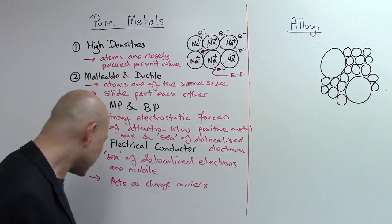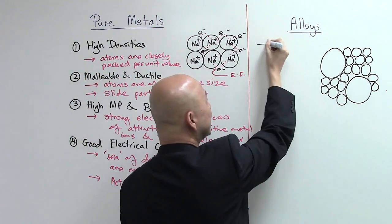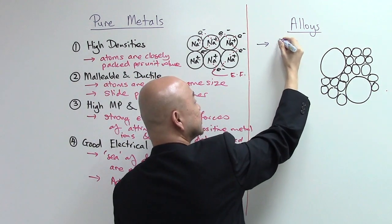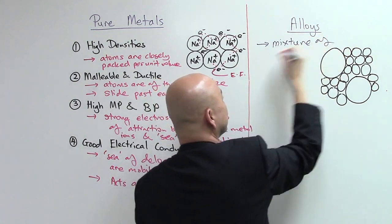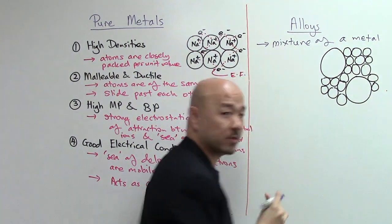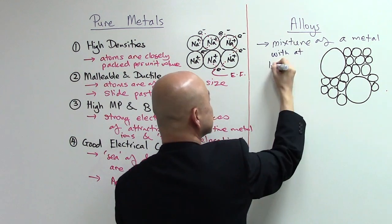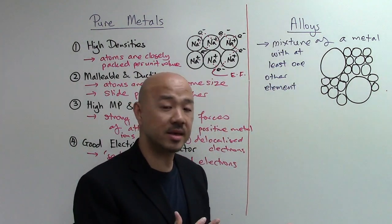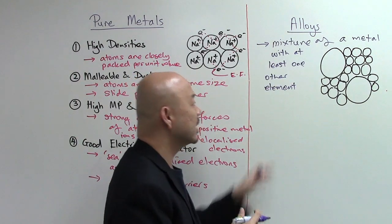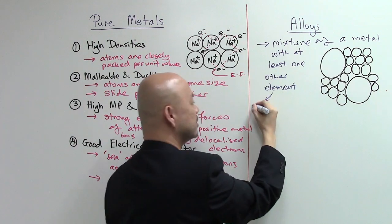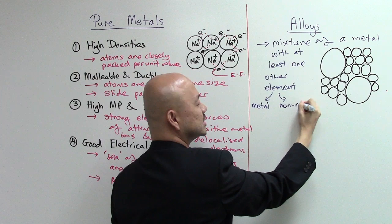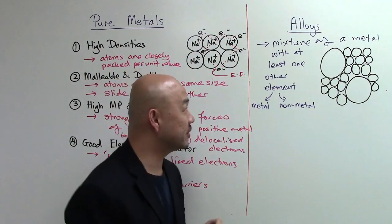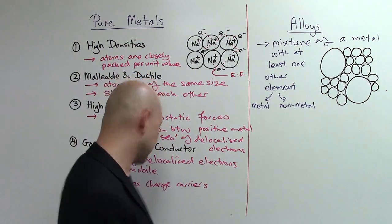Instead, we see metals used as alloys in everyday life. Alloys are formally defined as a mixture of a main metal with at least one other element — and that element can be more than one. It can be either a metallic element or a non-metallic element. The key difference lies in the structure of the alloy.